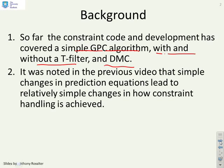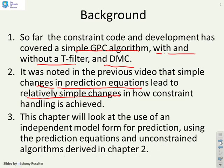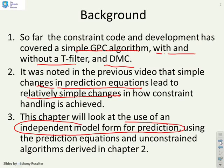It was noted in the previous few videos that simple changes in the prediction equations, as you get with the T-filter and DEMC, have led to relatively simple changes in how constraint handling is achieved. So what we're going to do now is use the same approach to look at what happens when you have an independent model form for predictions. And again, you will see that it's relatively straightforward.